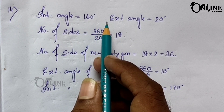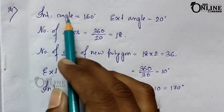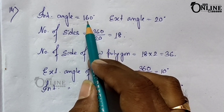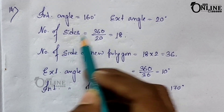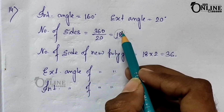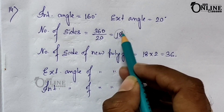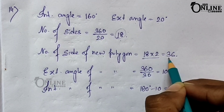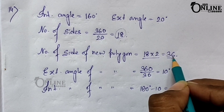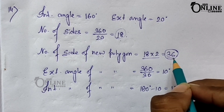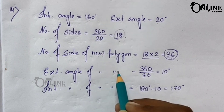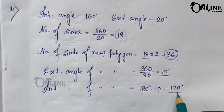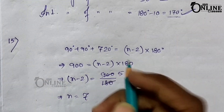Problem number fourteen: each interior angle of a regular polygon is 160°. Find the interior angle of a regular polygon which has double the number of sides. First, exterior angle = 180° − 160° = 20°, so number of sides = 360° ÷ 20° = 18. The new polygon has 36 sides. Its exterior angle = 360° ÷ 36 = 10°, so its interior angle = 180° − 10° = 170°.